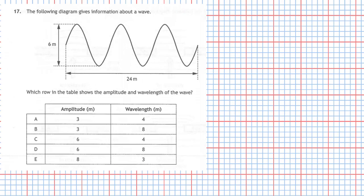Question 17 from section 1 of the 2019 National 5 Physics Examination. The following diagram gives information about a wave and you can see the shape of the wave as shown. Which row on the table shows the amplitude and the wavelength of the wave?